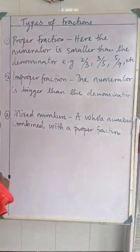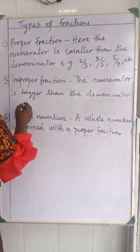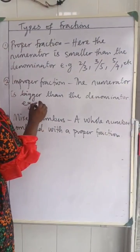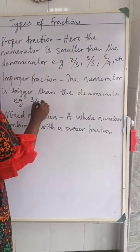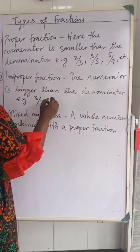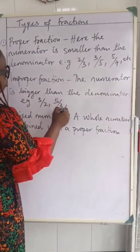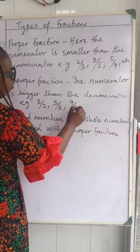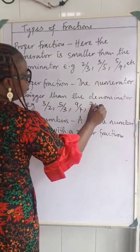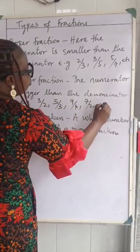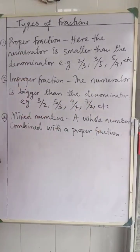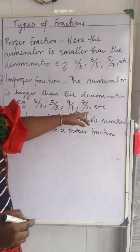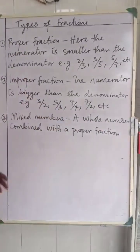Let's look at some examples of an improper fraction. We'll have 3 over 2, 5 over 3, 9 over 4, 7 over 2, and so on. The numerators here are bigger than the denominators.